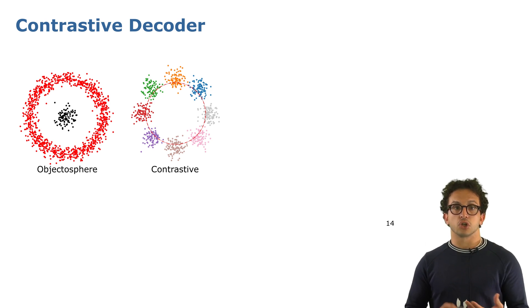Then the second loss function is the contrastive loss function. This applies only to the known classes, and what it does is try to spread the norms on the circle.